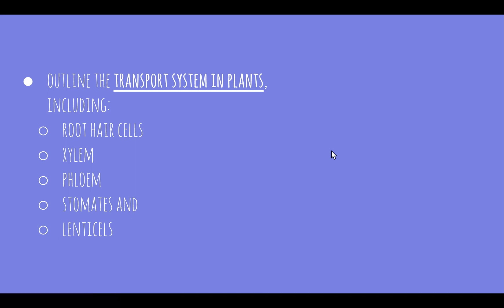Welcome to the next video in the Patterns in Nature topic. This video is going to be looking at the dot point: outline the transport system in plants including root hair cells, xylem, phloem, stomates and lenticels. Throughout this video we're going to be looking at each of these five structures — their structure and their function — and how they are involved in the transport systems in plants.